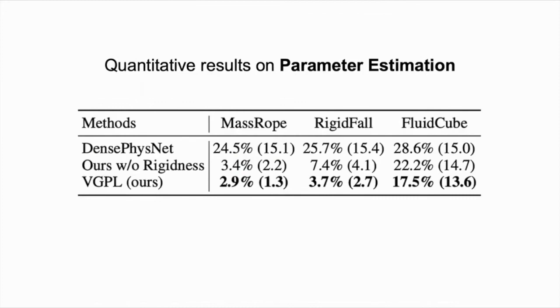Here, we compare our model with DensePhysNet and another model whose dynamics prior does not impose any constraints for rigid body motion. We measure the performance using the mean absolute error between each module's prediction and the ground truth. Numbers in parentheses report the standard deviation.